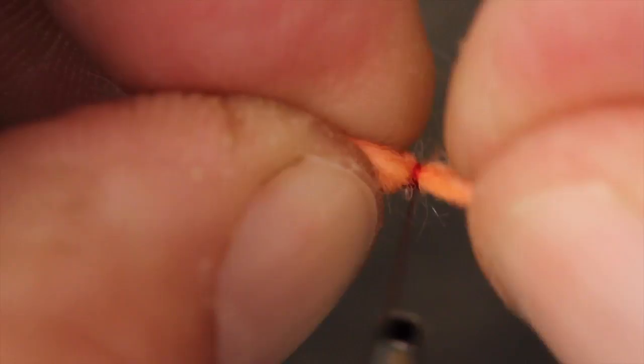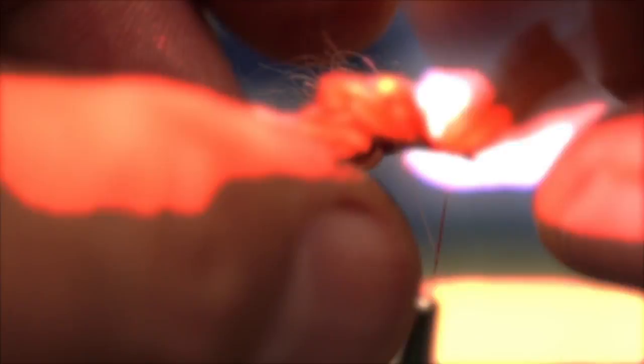The loops in the middle of the fly should be slightly taller than those at the ends to produce the classic sucker spawn profile, if there is such a thing.